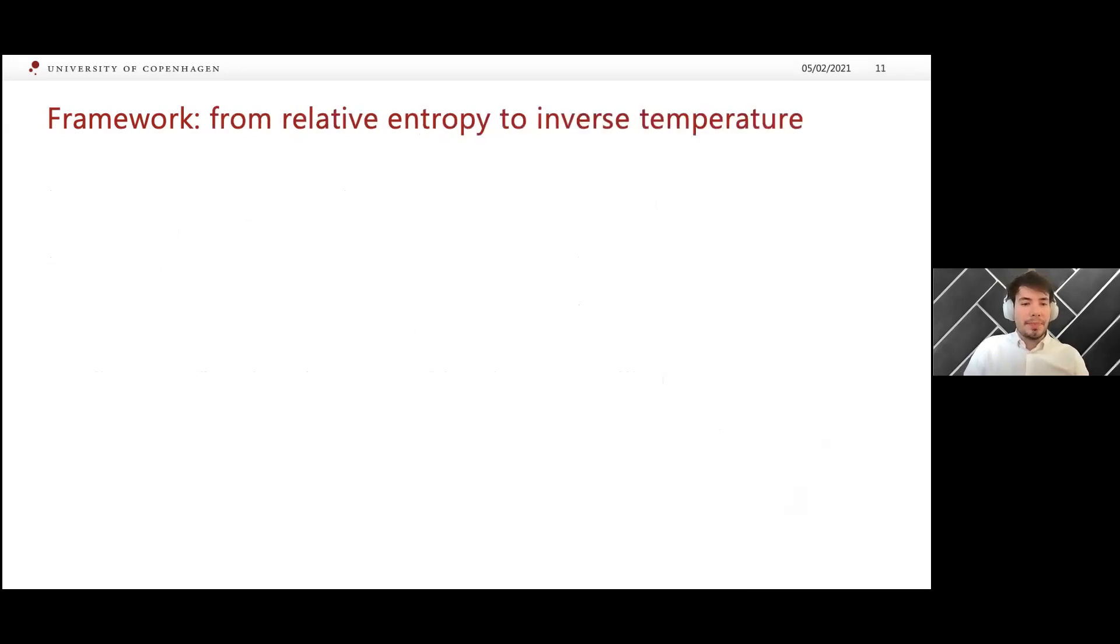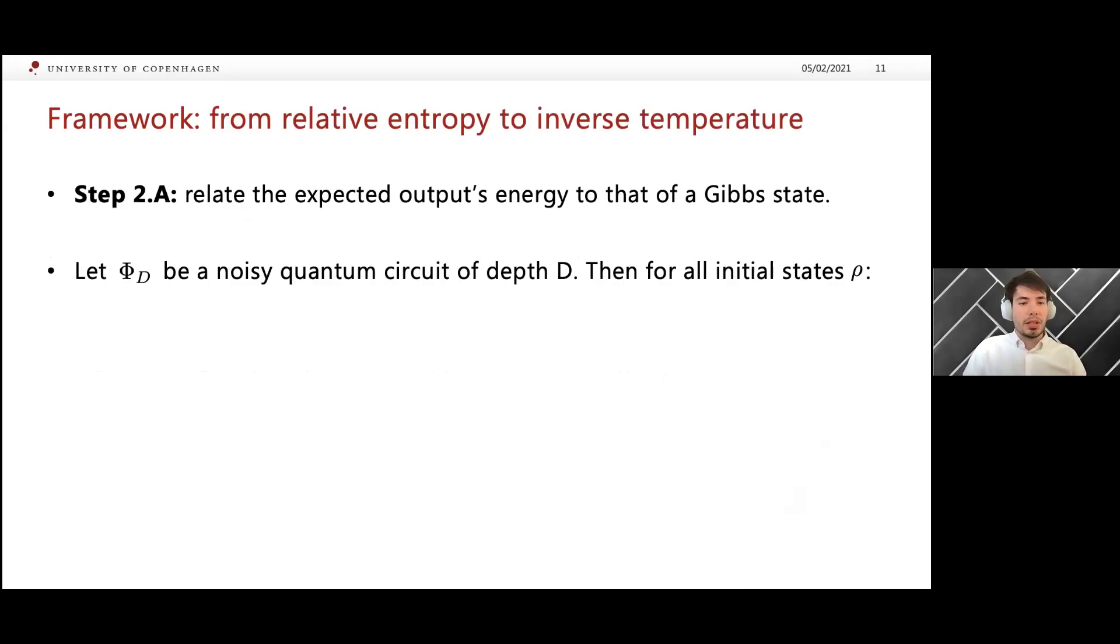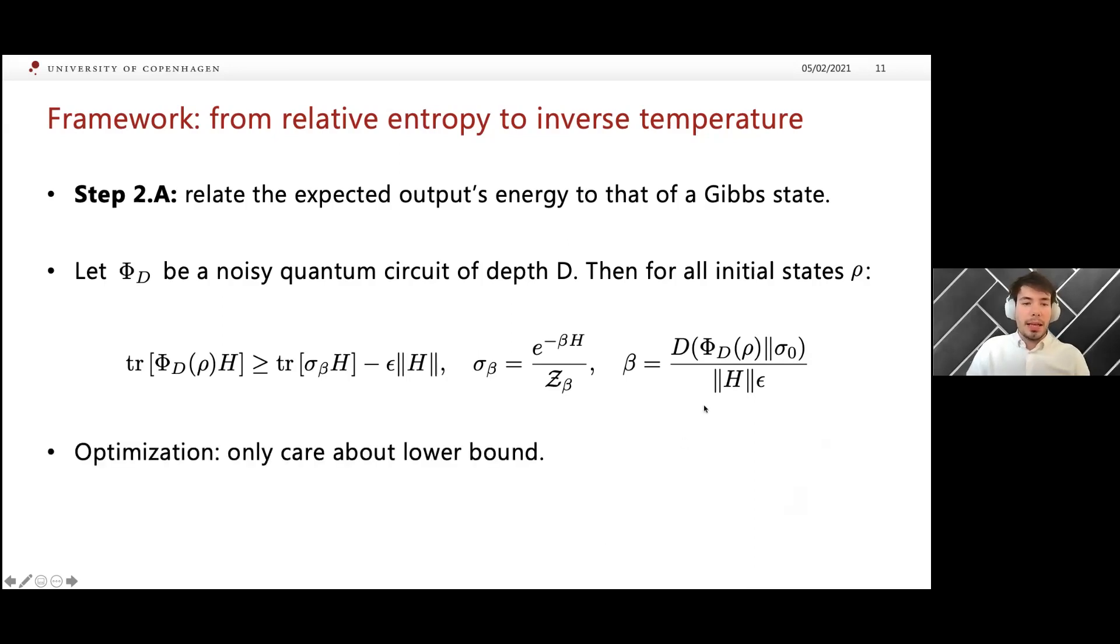Now this is the convergence result we need. Then, as I mentioned before, you need to relate the output's energy to that of a Gibbs state. What one can show using, for instance, mirror descent or the variational formulation of the relative entropy is that if you let this be the output of the circuit, then its energy is lower bounded by the energy of this Gibbs state minus this error term. The inverse temperature beta is given by this ratio of the relative entropy and the operator norm of your Hamiltonian.